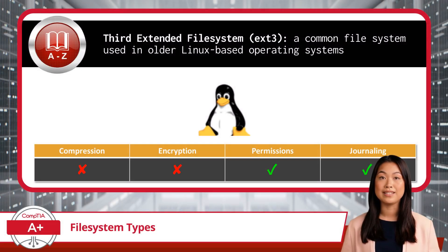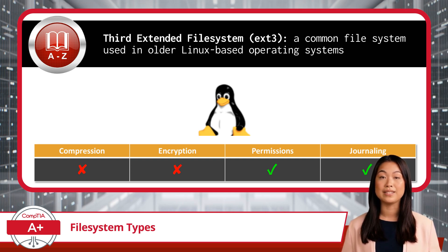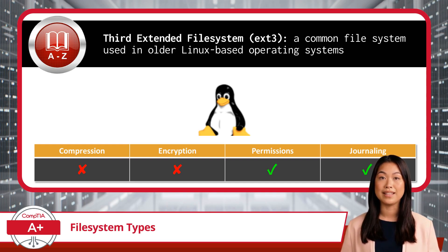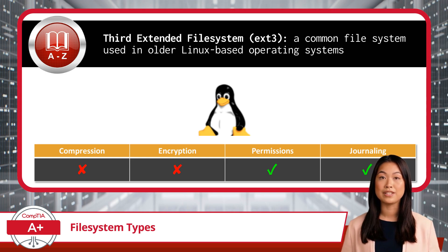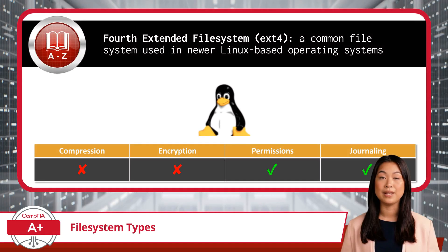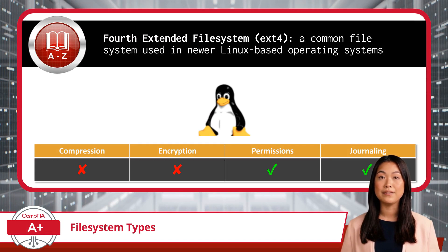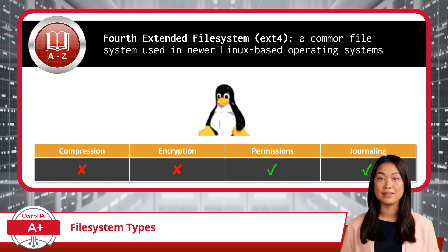Moving on, we have the Third Extended File System, or EXT3. EXT3 is a common file system used in older Linux-based operating systems and is renowned for its robustness and reliability. It supports journaling, which helps prevent file system corruption and simplifies data recovery. EXT3 does not natively support file compression or encryption, but does allow for file permissions. An improvement over EXT3 is the Fourth Extended File System, or EXT4, which offers better performance and larger file size support, making it great for newer Linux-based operating systems.